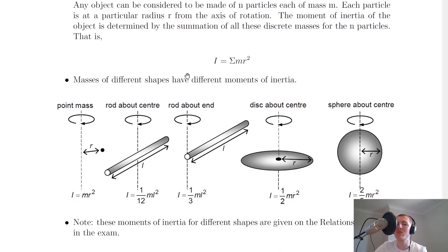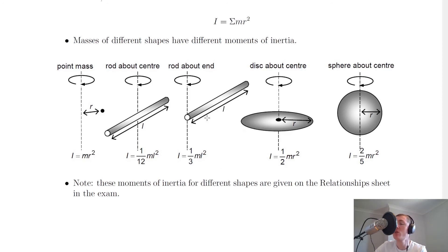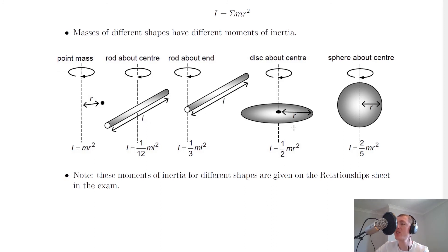Masses of different shapes have different moments of inertia. Note that these expressions are given in the relationship sheet in the exam, and there are five different expressions depending on the shape. We've already seen that the point mass is I equals mr squared. If we've got a rod rotating about its centre, it's I equals one-twelfth mL squared, where L is the length of the rod. If we've got a rod rotating about its end rather than its centre, it's I equals one-third mL squared. Notice that the moment of inertia for rotating a rod about its end is four times greater than for rotating it about its centre, because there's more mass at a greater distance from the axis. Next, a disc rotating about its centre is given by I equals one-half mr squared, where r is the radius of the disc. And lastly, a sphere rotating about its centre is I equals two-fifths mr squared, where r is the radius of the sphere.